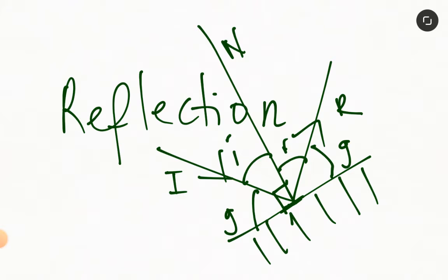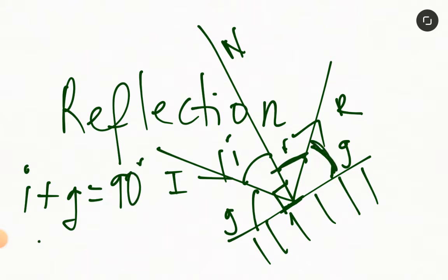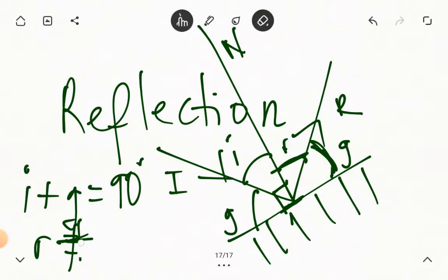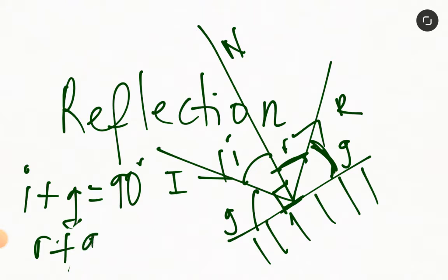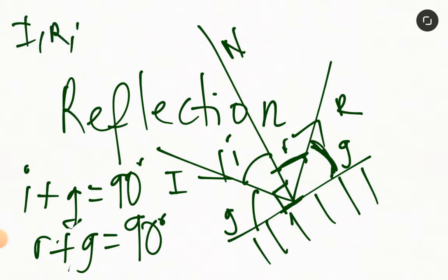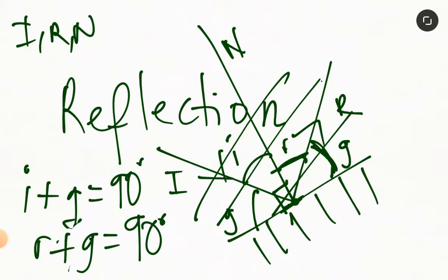That means that automatically you see that I plus G must be equal to 90 degrees. Similarly, R plus G must also give us 90 degrees. According to law 1, we said that the incident ray, the reflected ray, and the normal at the point of incidence all lie in the same plane — they were all in the same plane. And we also mentioned that the angle of incidence is equal to the angle of reflection; that was law 2.